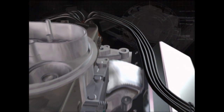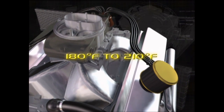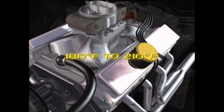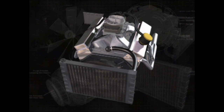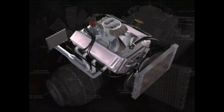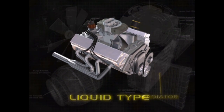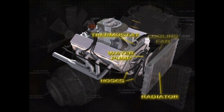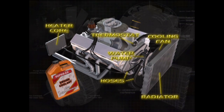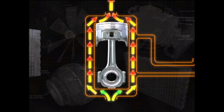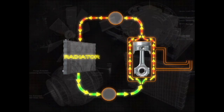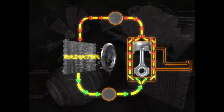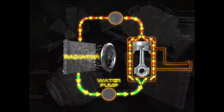Most production engines are designed to have a normal operating temperature between 180 and 210 degrees Fahrenheit — the range where the engine runs most efficiently — but keeping it there is no small task since temperatures in the combustion chamber can reach 4,200 degrees or more. Most automotive cooling systems are liquid type, including a radiator, various hoses, a water pump, thermostat, cooling fan, heater core, and coolant. Coolant is a mixture of antifreeze and water. Inside the engine, water jackets circulate coolant near the combustion chambers to absorb heat. The coolant then flows into the radiator, a large water-to-air heat exchanger, before beginning its journey back into the engine. The water pump is the heart of the system.